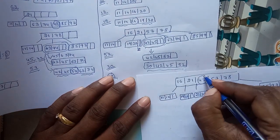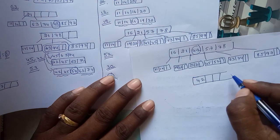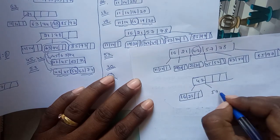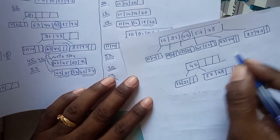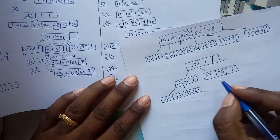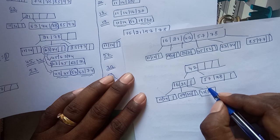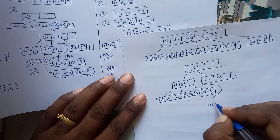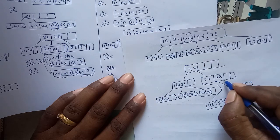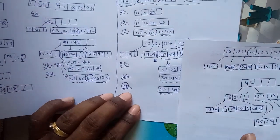Perform another split on the root — move 42 to the new root. The left child of 42 is the subtree with 16 and 21, and the right child is the subtree with 57 and 78. For 16: left child 11, 14; right child 19, 20. For 21: right child 22, 30. For 57: left child 45, 52; right child 63, 74. For 78: right child 85, 97. This is the final tree.